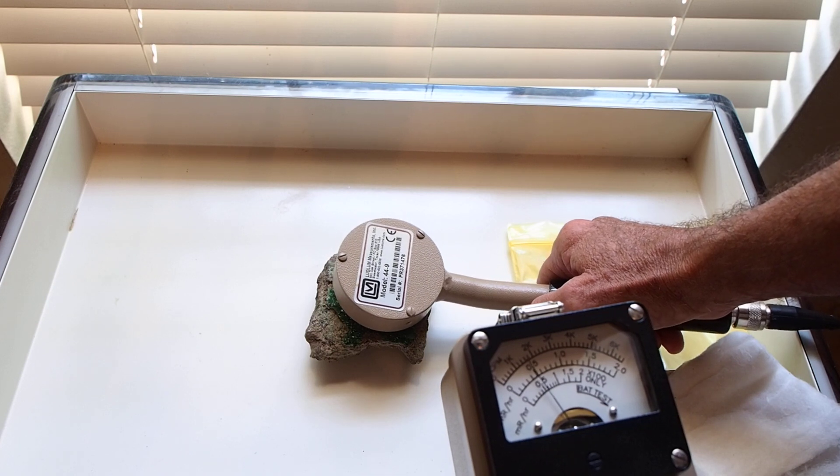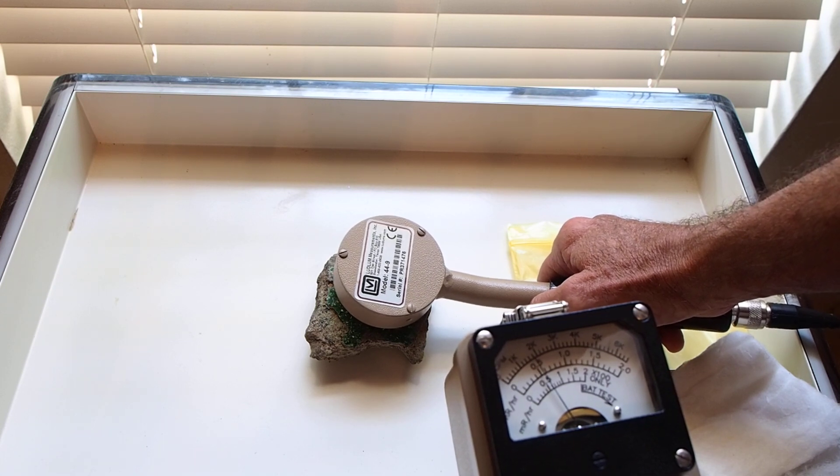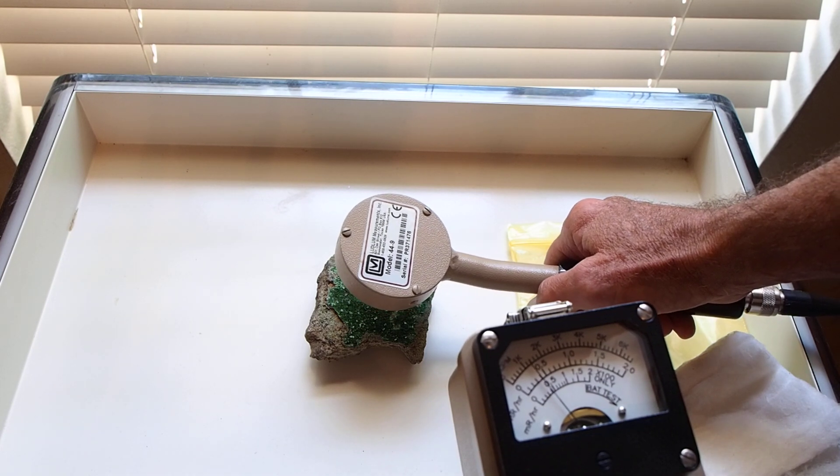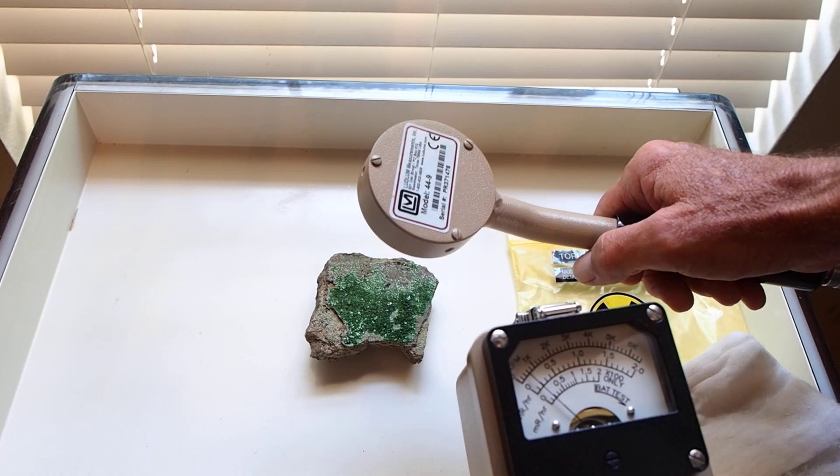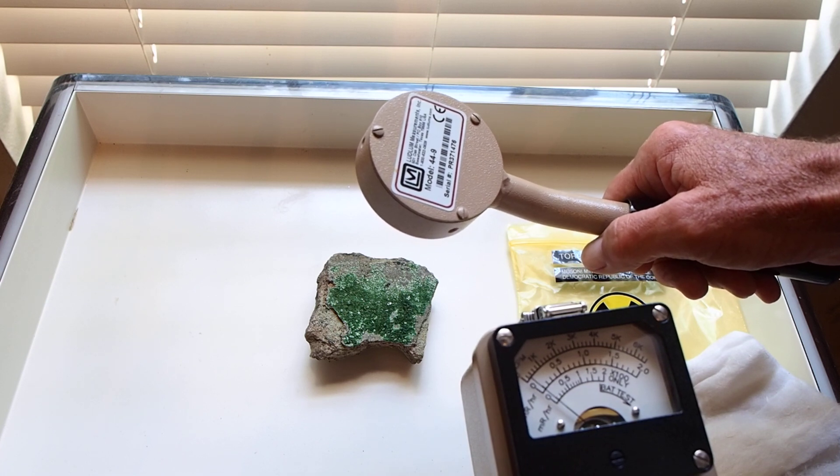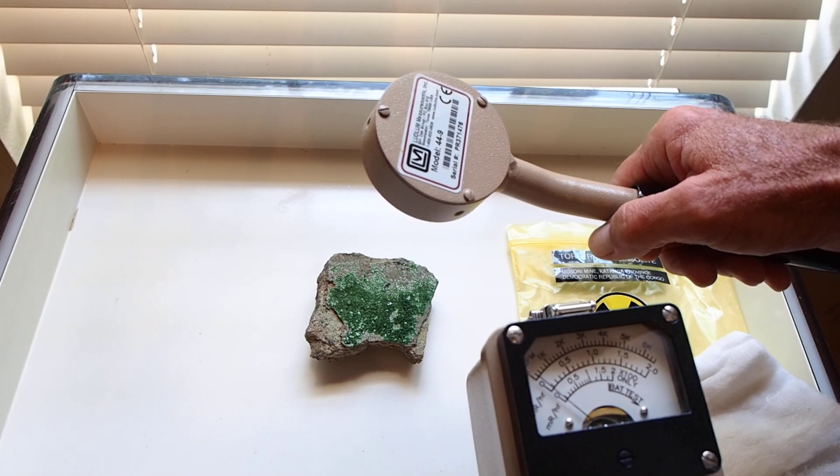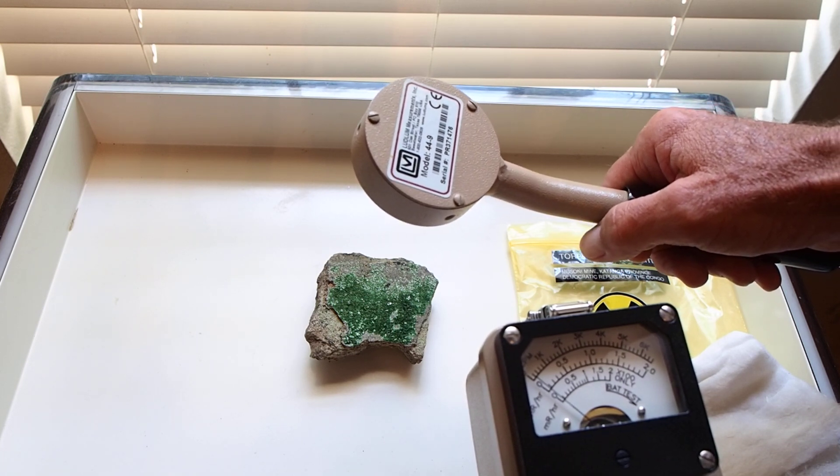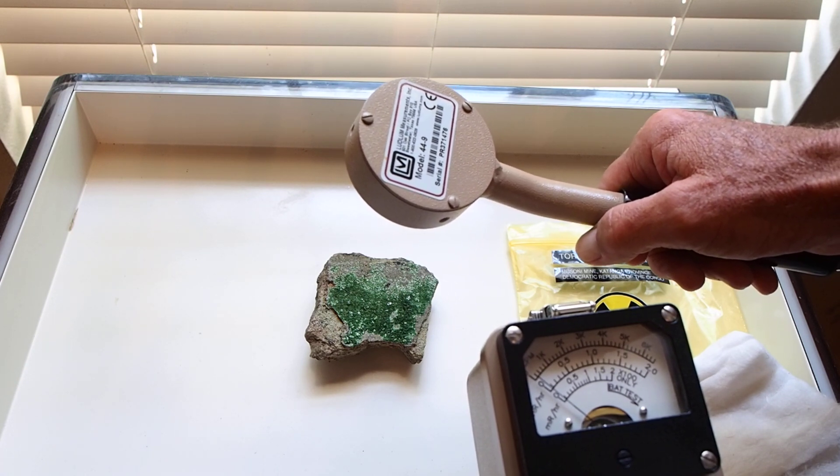Using the inverse square law, we double the distance. It should reduce by a factor of 4 the count rate. Still very high. Reading from a distance of approximately 6 inches. Even at this distance, we're getting a count rate of approximately 20,000 counts per minute.